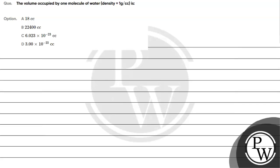Let's read this question. The question says: volume occupied by one molecule of water, when the density is given as 1 gram per centimeter cube. Option A is 18 cc, option B is 22,400 cc, option C is 6.023 × 10⁻²³ cc, and option D is 3.00 × 10⁻²³ cc. The key concept for this question is: